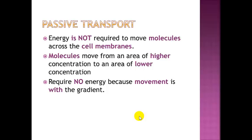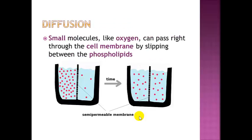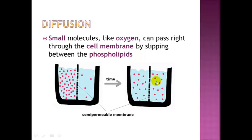One of the first types of passive transport is diffusion. Diffusion is when small molecules like oxygen can pass right through the cell membrane by slipping between the phospholipids. In the example shown, you have a high concentration of molecules that slip right through the phospholipid bilayer to the other side, and they continue to do this until they reach equilibrium — a stable balance where there's roughly the same amount on each side.